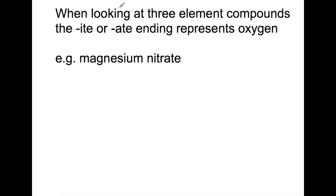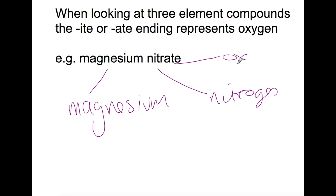Where you have three element compounds, the same rule applies, but the ATE or ITE part represents oxygen. So here we have magnesium, nitrogen, and oxygen.